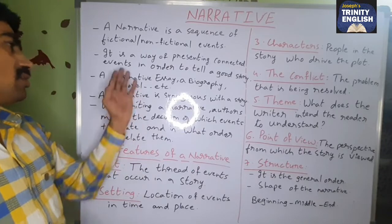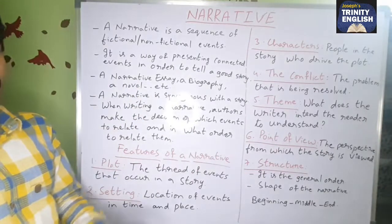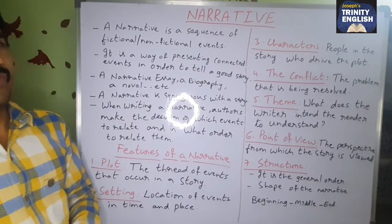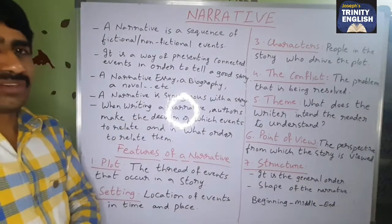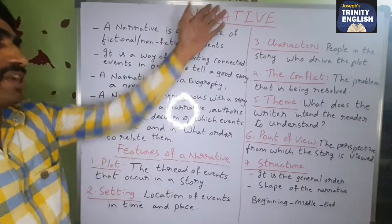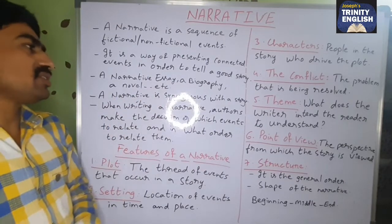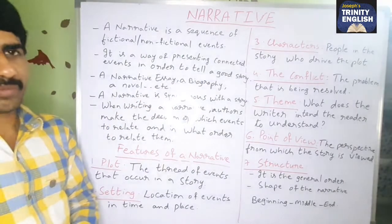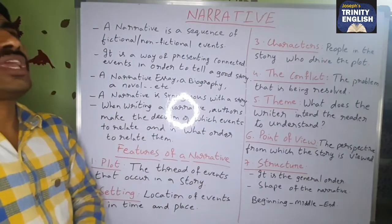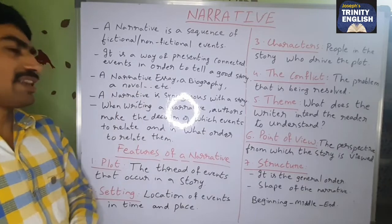Some examples of narrative are: a narrative essay, a biography, an autobiography, a novel, accidents, incidents, and events. All these kinds of things come under narrative, and a narrative is synonymous with a story — it is almost like a synonym, carrying the same kind of meaning.